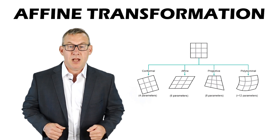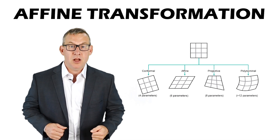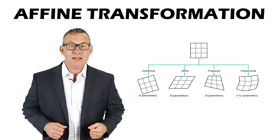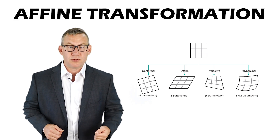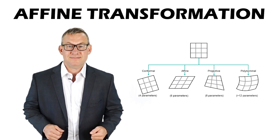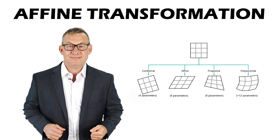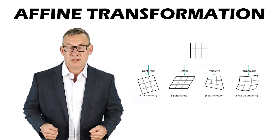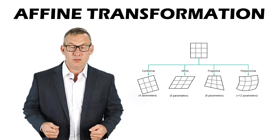Affine transformations are fit by minimizing the root mean square error. A lower root mean square error indicates a more accurate transformation. Analyzing the root mean square error is an iterative process — the error is calculated for one control point at a time, points with the highest error are corrected, and the root mean square error is recalculated. Affine transformations use six parameters and require at least three control points, but four control points are needed to estimate the root mean square error.